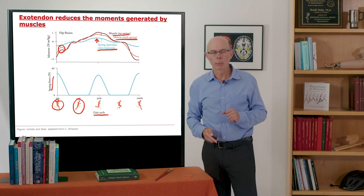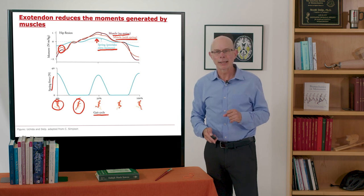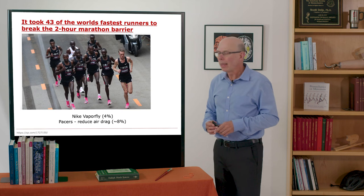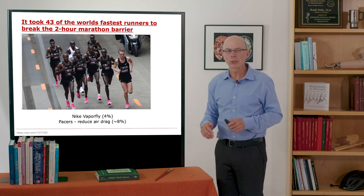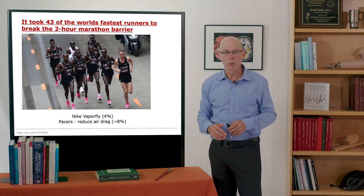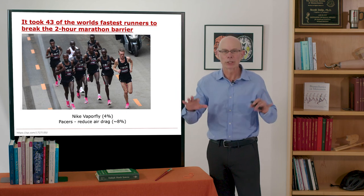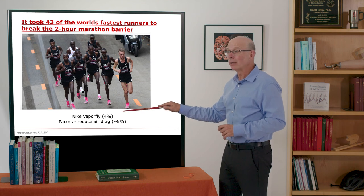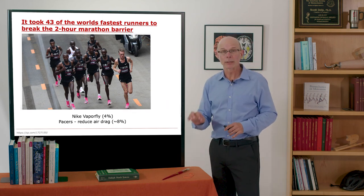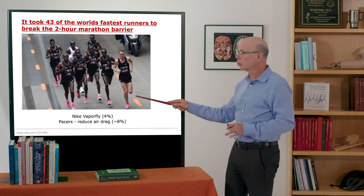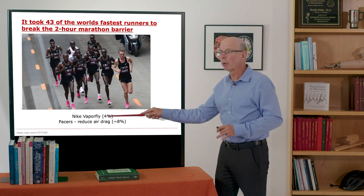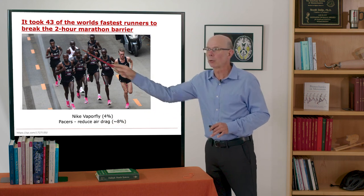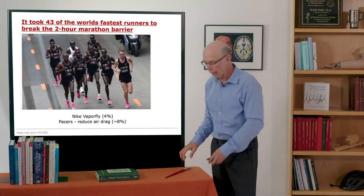Now the story is a little bit more complex than that and you'll have to read the paper to get the details. But I wanted to point out that it took 43 of the world's fastest runners to break the two-hour marathon record. A fantastic achievement. It was achieved by a decade-long Nike development effort to create the Vaporfly. And that Vaporfly is an excellent shoe that saves you about four percent in metabolic cost. And of course the pacers in front of the person who broke the two-hour record were saving air drag.